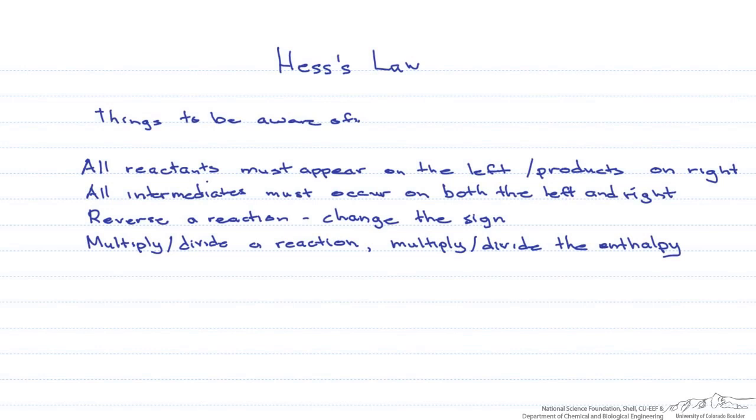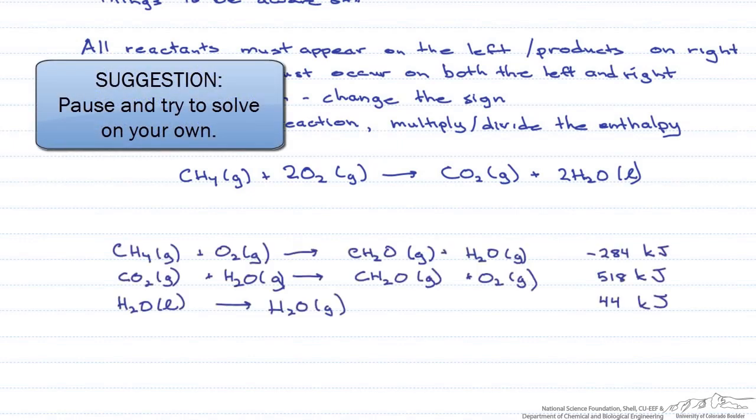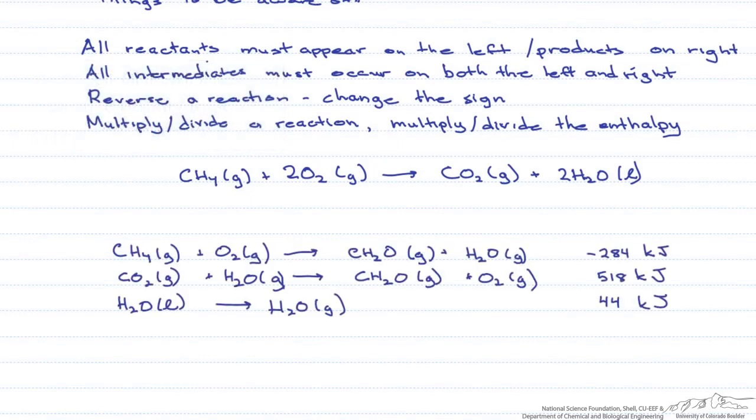Let's say we want to find the heat of reaction for the combustion of methane. We're given the following reactions and their enthalpies, and we're going to use them to figure out what the heat of reaction is for the combustion of methane. Reaction one gives us the methane on the correct side and in the correct amount, so we'll leave it and its enthalpy the way it is.